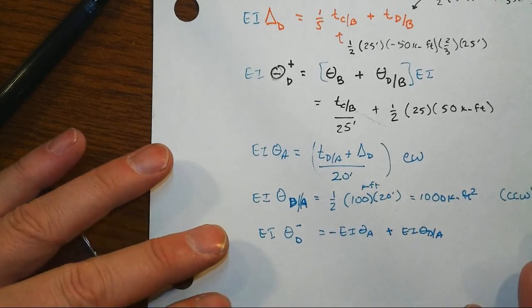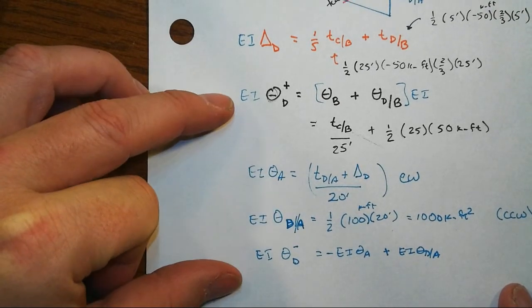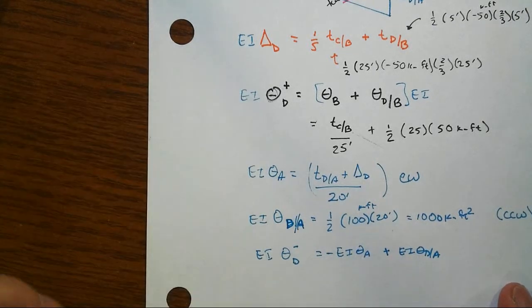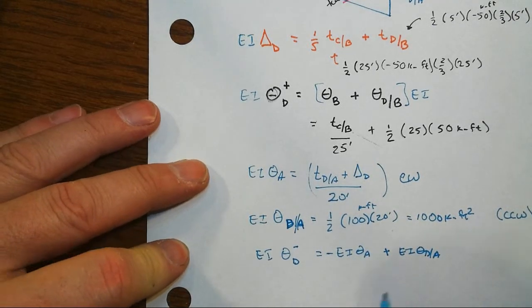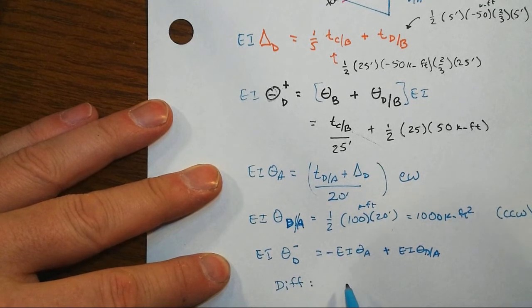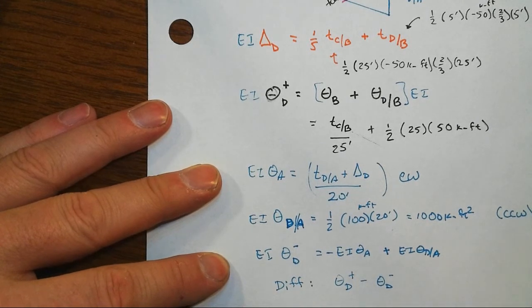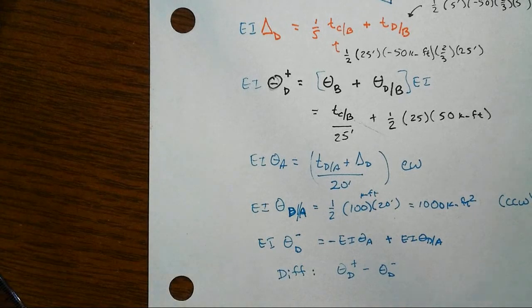And of course what we want is the discontinuity. That would be the difference between those. So we just take then theta D to the right, subtract off theta D to the left, and that will be our answer as a function of EI for that particular quantity.